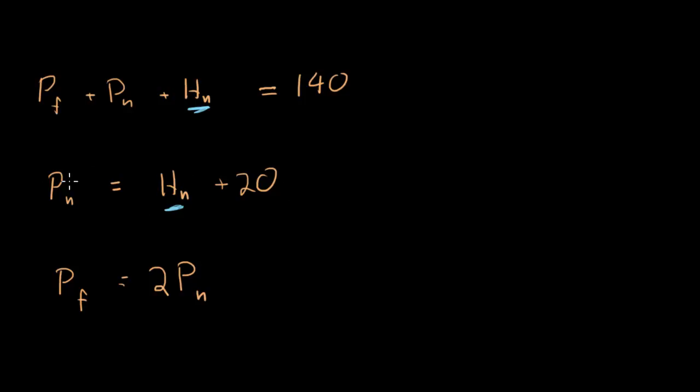This equation will be useful because it's relating the variable I want with another variable, and that'll be especially useful if I can get this equation down to just H_n and P_n. Really, the one I want to get rid of is P_f. Is there a way to get rid of my P_f in this big top equation? Sure, I know that P_f equals 2P_n, so I can just substitute 2P_n into this top equation for my P_f.